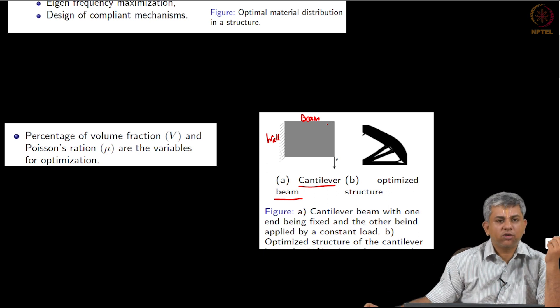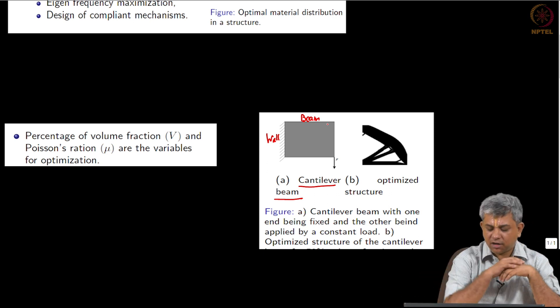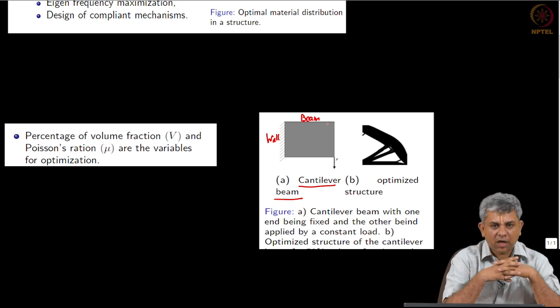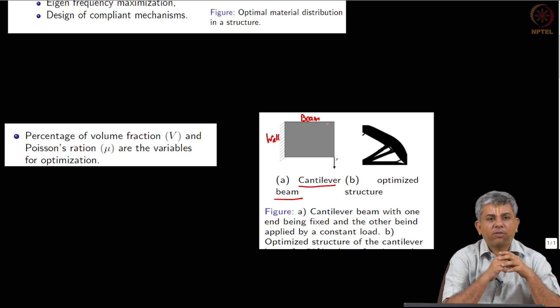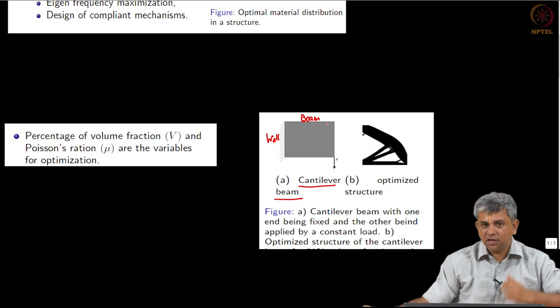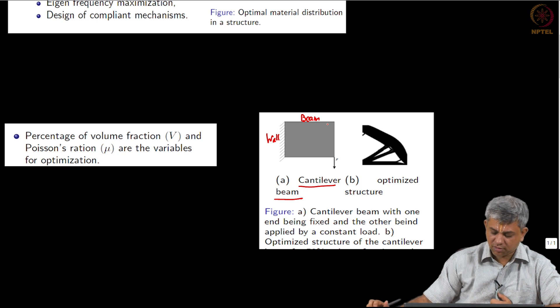Now what you would like to know is, given that I am able to use only a certain percentage of this mass, what is the optimal way for me to distribute this mass so that this thing does not break? So that is the problem that we are going to consider.